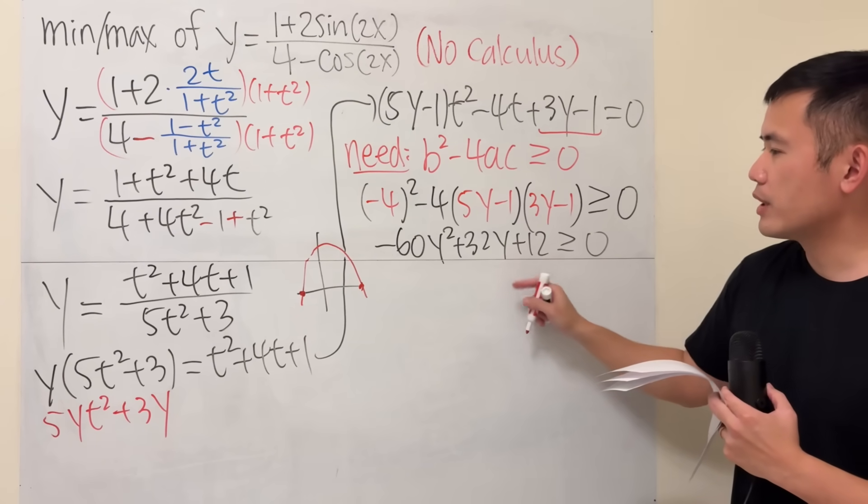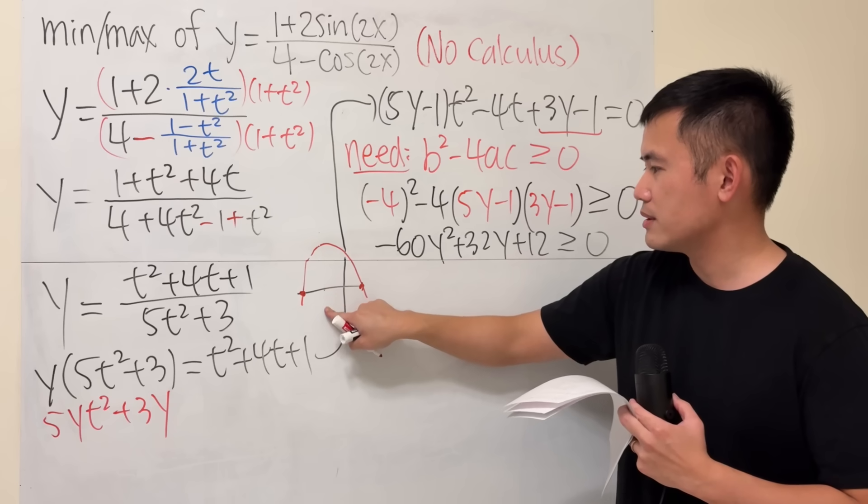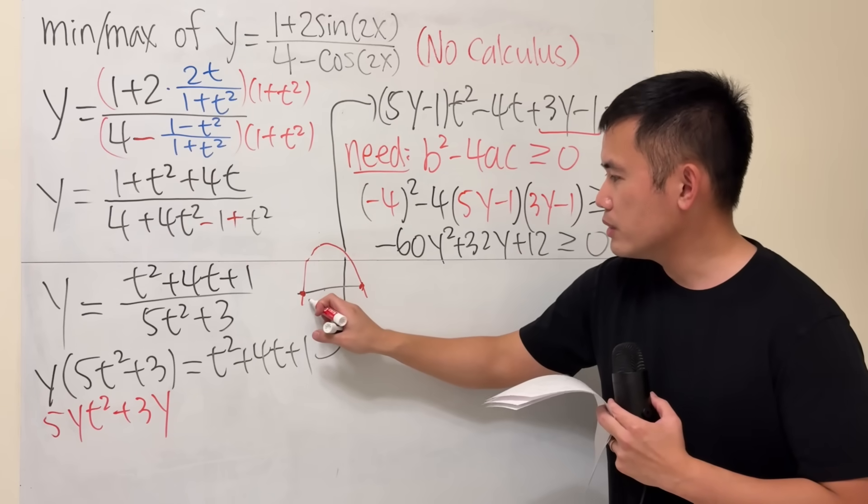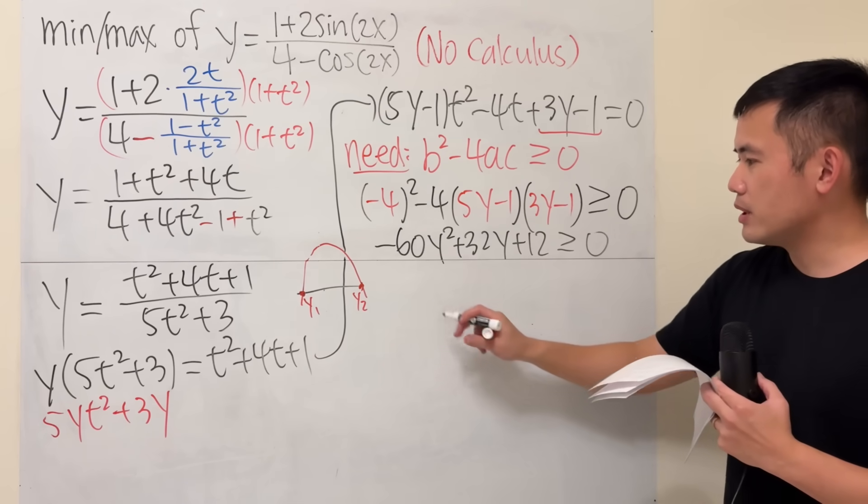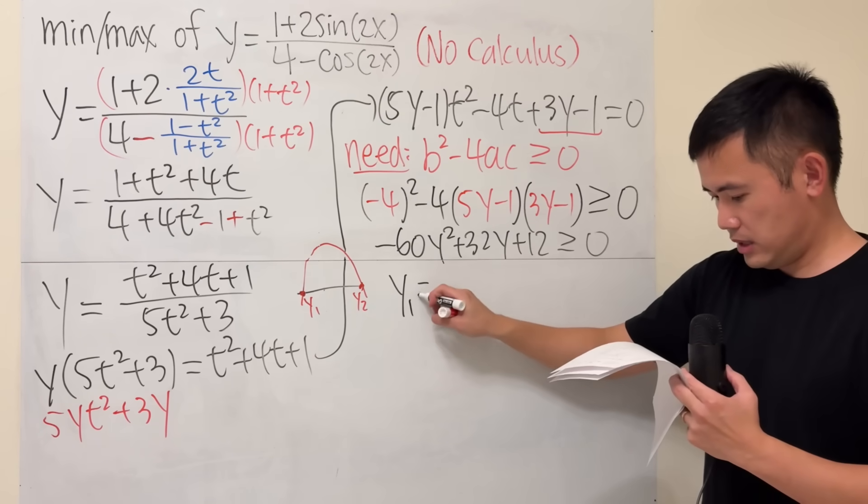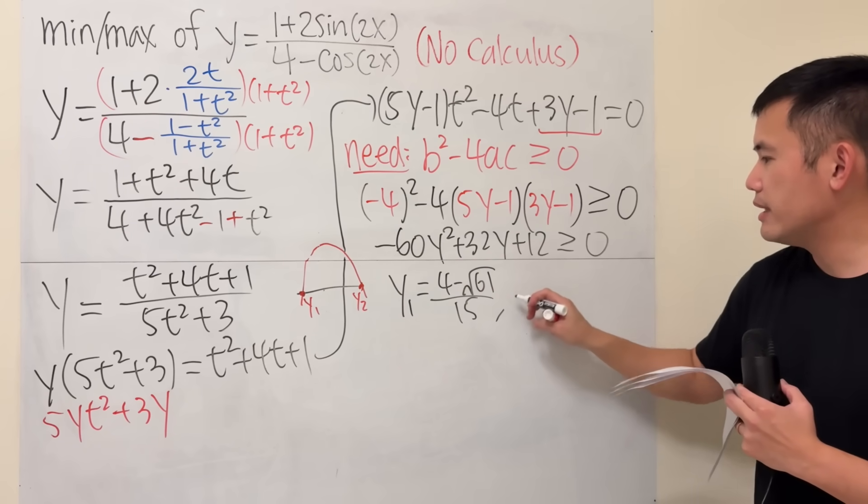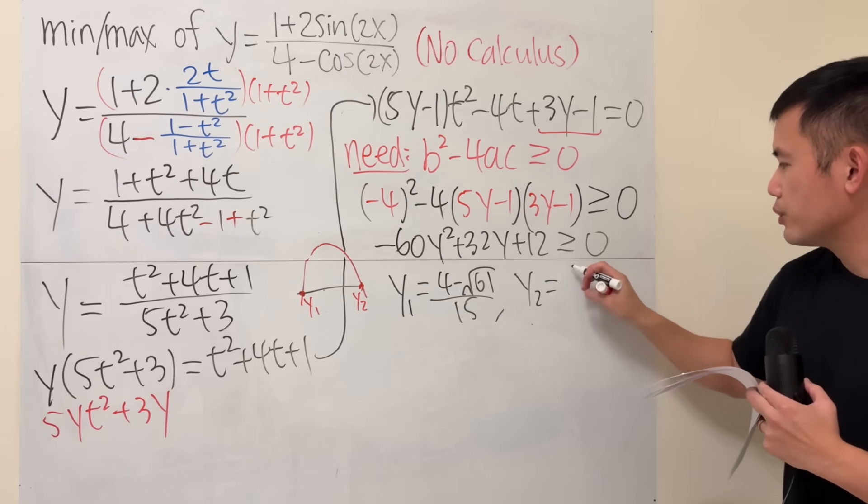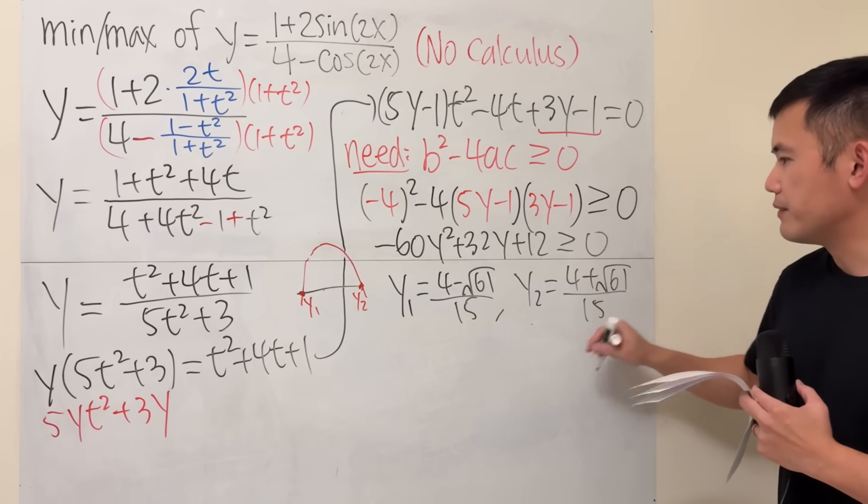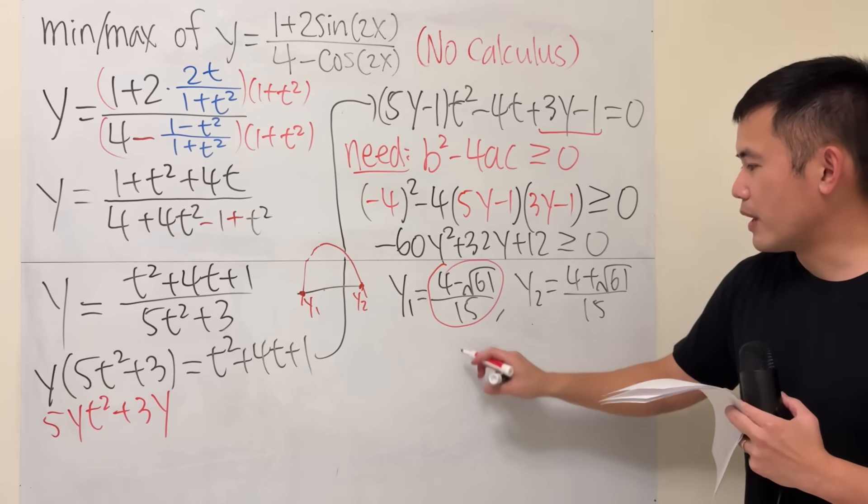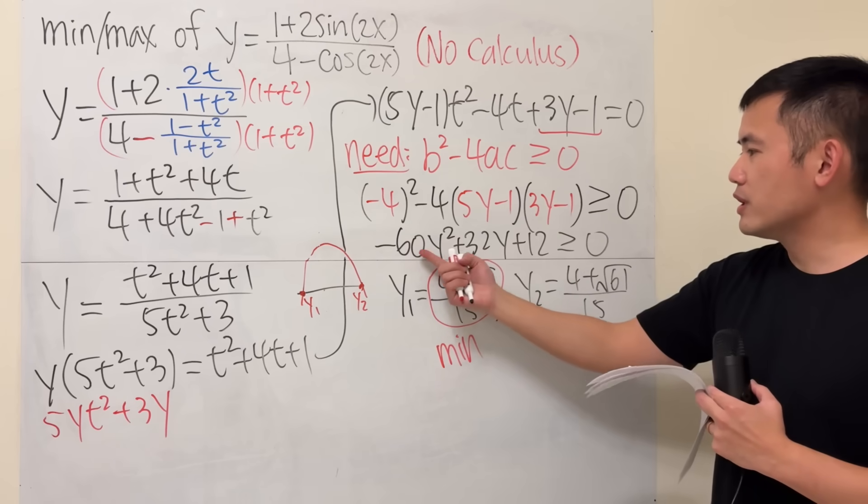And we have two solutions. Notice that the constant term right here is 12, so this is meant to be 12, right? And perhaps I'm not going to show you guys the y-axis. I will call this right here y1. I will call this right here y2. And solve it. I will tell you that y1 is equal to 4 minus square root of 61 over 15. And then y2 is equal to 4 plus square root of 61 over 15. This right here, it's a smaller value, and it will give you the minimum.